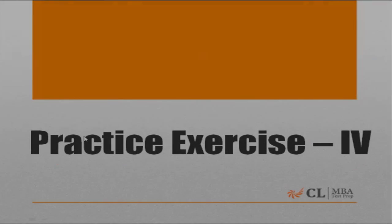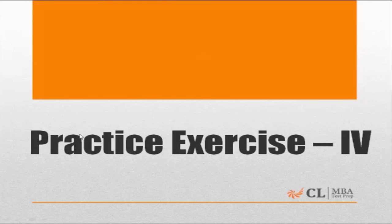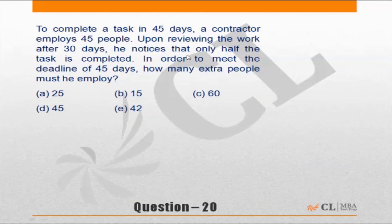Let's look at practice exercise 4 from the Time Speed Distance funda book, Question 20. To complete a task in 45 days, a contractor employs 45 people. Upon reviewing the work after 30 days, he notices that only half the task is completed. In order to meet the deadline of 45 days, how many extra people must he employ?